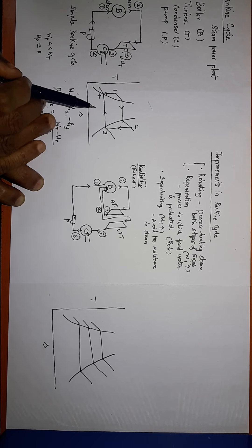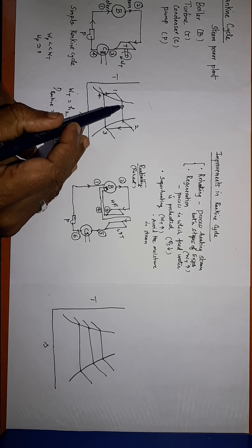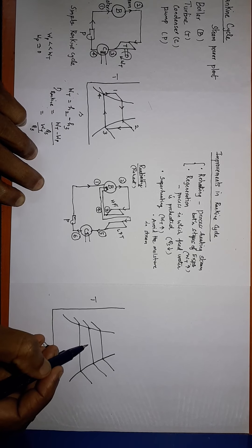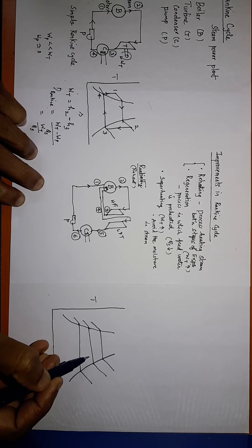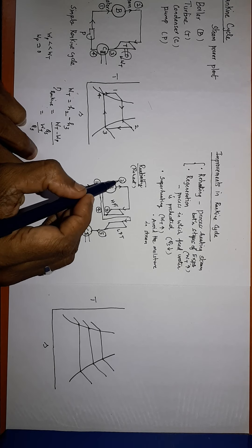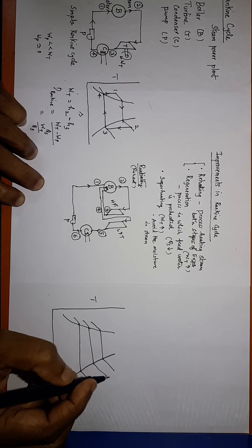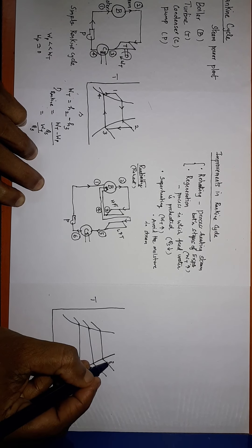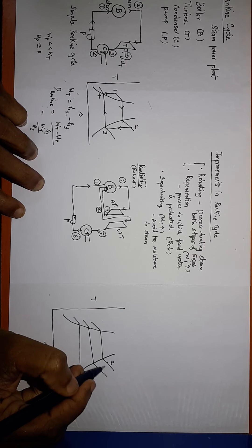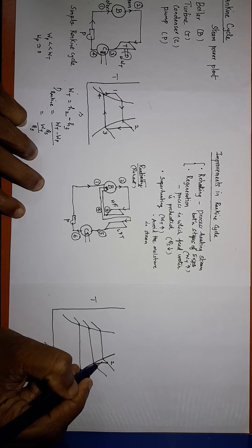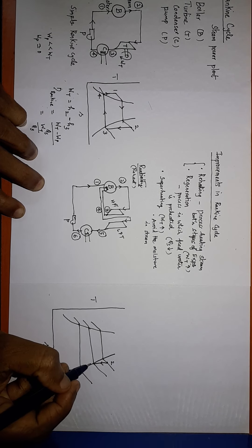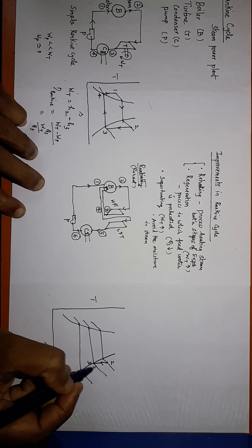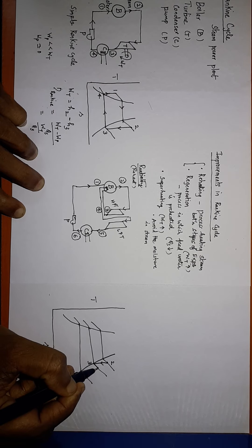In a simple cycle we had only two pressure lines — the boiler pressure and the condenser pressure. Here I have one additional pressure, which is the intermediate pressure between the stages of expansion. Starting at state 2 — the inlet to the high pressure turbine — the steam is superheated. It expands isentropically up to state 3. Then process 3 to 4 is constant pressure reheating.